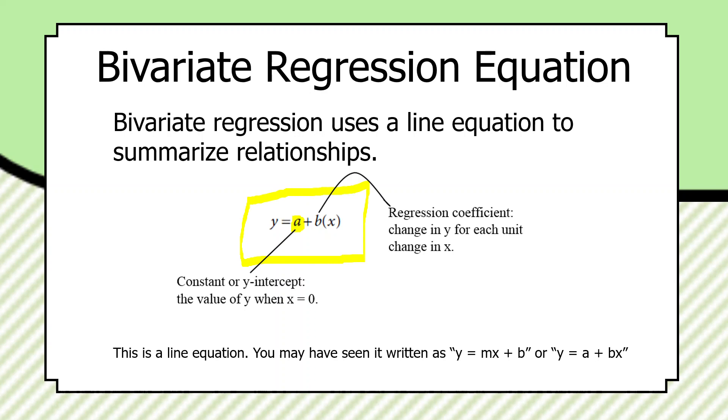The workhorse of regression is b, or the regression coefficient. The regression coefficient communicates the change in y for each unit change in x. And we'll see in a few minutes, it's actually the average change in y for each unit change in x.